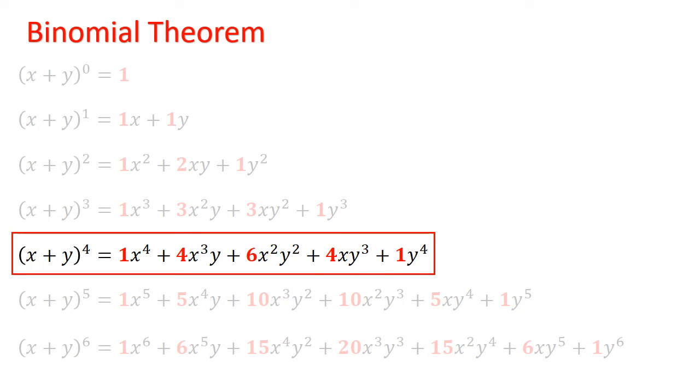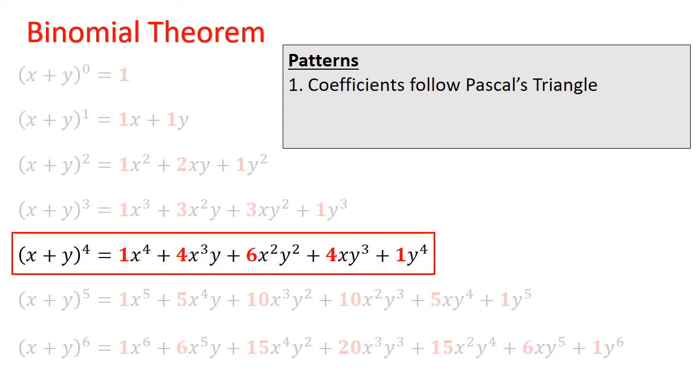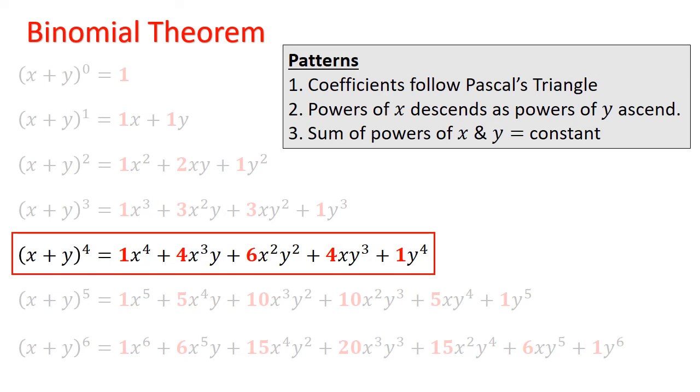Take the expansion of (x+y) to the power of 4. You will see that the coefficients follow Pascal's triangle: 1, 4, 6, 4, 1. The powers of x will descend as the powers of y ascend along the row. The sum of the powers of x and y would always be 4, a constant.